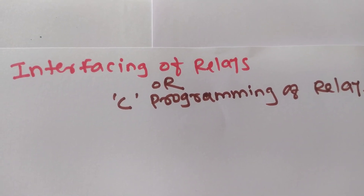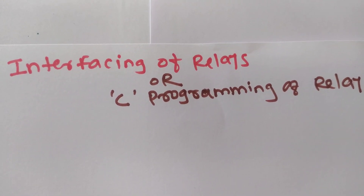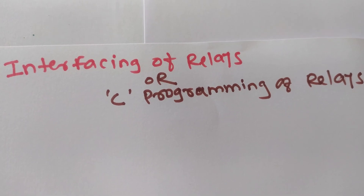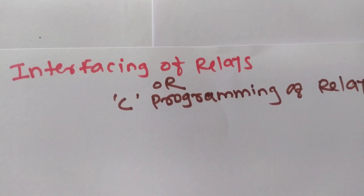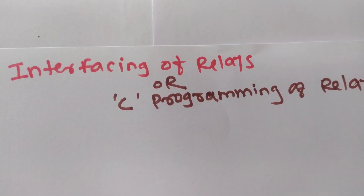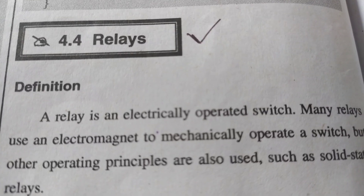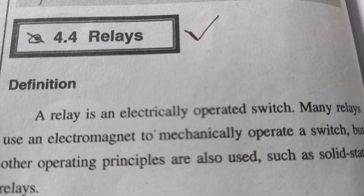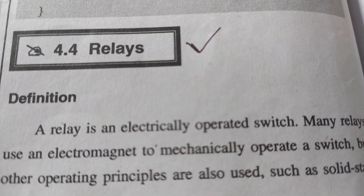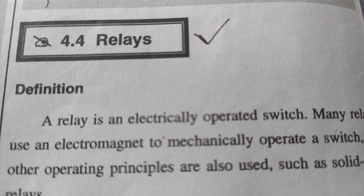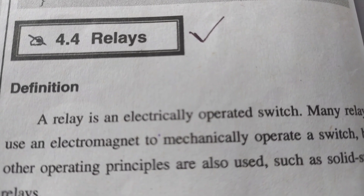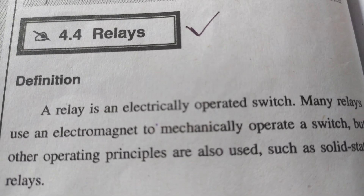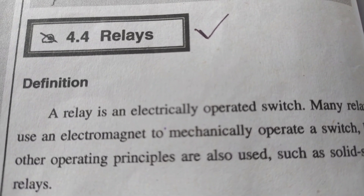Now we will see the interfacing of relay and C programming of relay. First of all, you should know what a relay is and what interfacing means. A relay is an electrically operated switch. Many relays use electromagnetism to mechanically operate a switch, but other operating principles are also used, such as solid state relays.